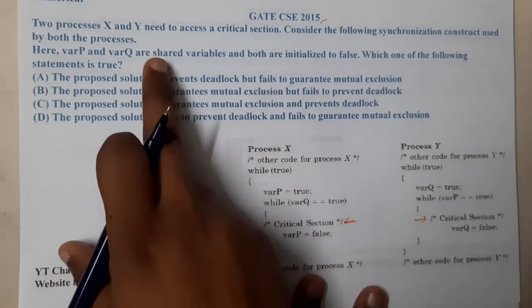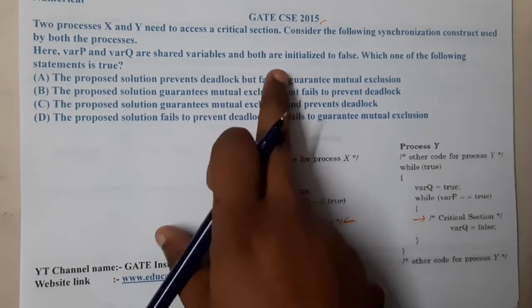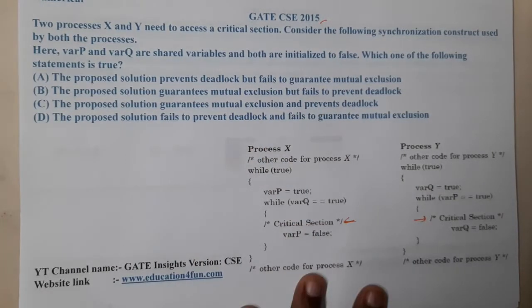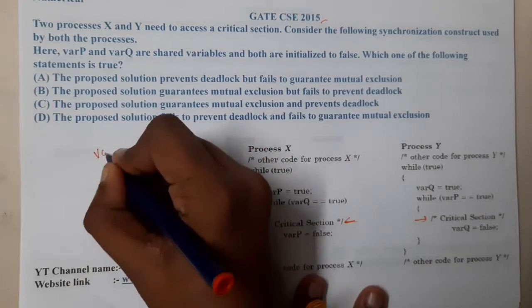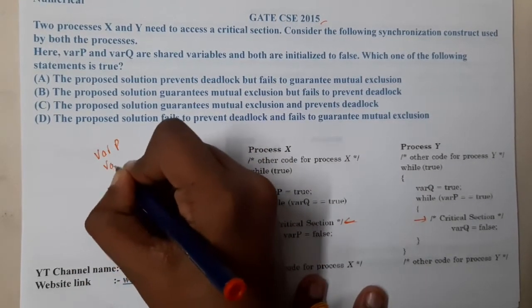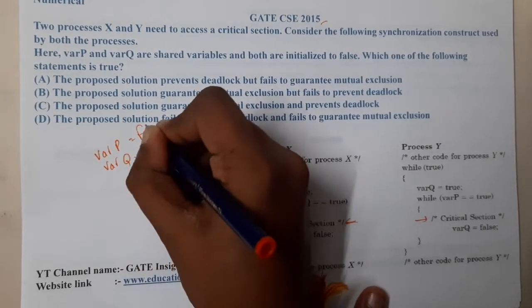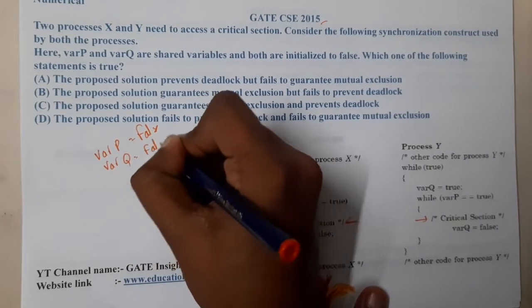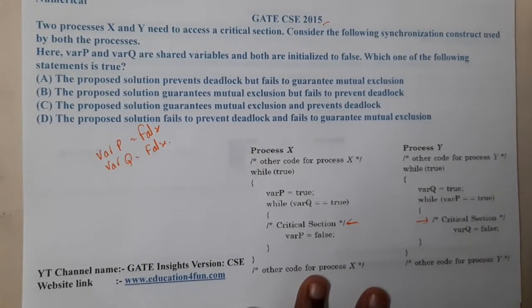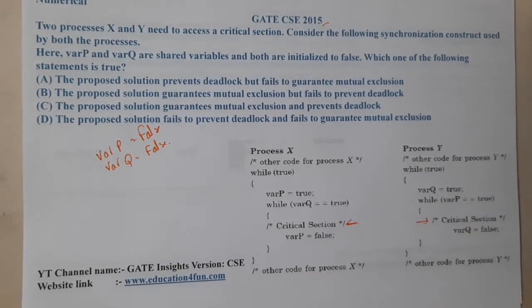Here varP and varQ are the shared variables and both are initialized to false. So varP and varQ are the shared variables and both of them are initialized to false.